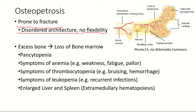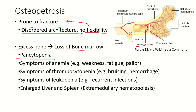In osteopetrosis, excess bone may deposit inside the medullary cavity — the cavity within the diaphysis or shaft of the bone that contains bone marrow. When excess bone is deposited in the medullary cavity, there is loss of bone marrow. Since bone marrow carries out hematopoietic activity, loss of bone marrow means hematopoietic activity is affected, resulting in pancytopenia and defective production of blood cells.